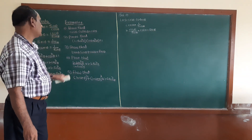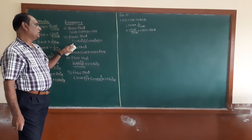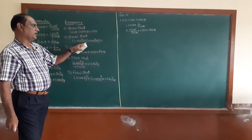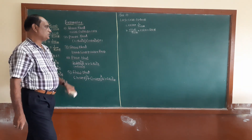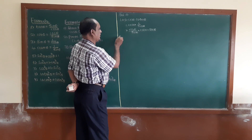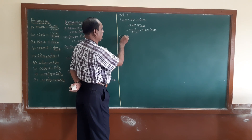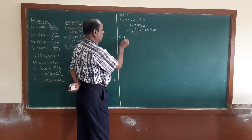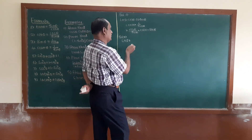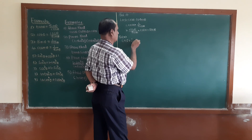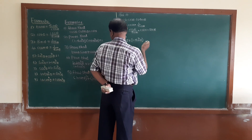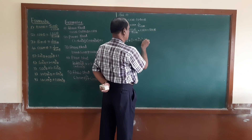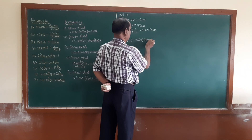The second problem: prove that (1 minus sine squared theta)(1 plus sine squared theta) is equal to 1. LHS is the starting point. Therefore, LHS equals (1 minus sine squared theta)(1 minus sine squared theta), one minus one minus sine squared theta...